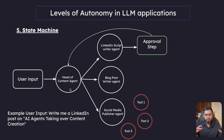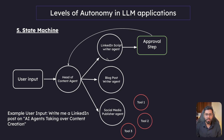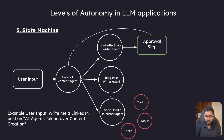The head of content agent looks at the prompt and decides whether it needs to talk to the LinkedIn script writer agent, the blog post writer agent, or the social media publisher agent. It sees the LinkedIn request and the topic, so it instructs the LinkedIn script writer agent to write the post. We can also add a human-in-the-loop step here. Once the LinkedIn script writer agent produces a draft, it sends it back to the head of content agent, which then asks the user: 'Is this good? Do you want any corrections?'